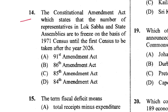Question 14: The Constitutional Amendment Act which states that the number of representatives in Lok Sabha and state assemblies are frozen on the basis of the 1971 census until the next census to be taken after the year 2026 — that was the 84th Amendment Act. D is the answer.